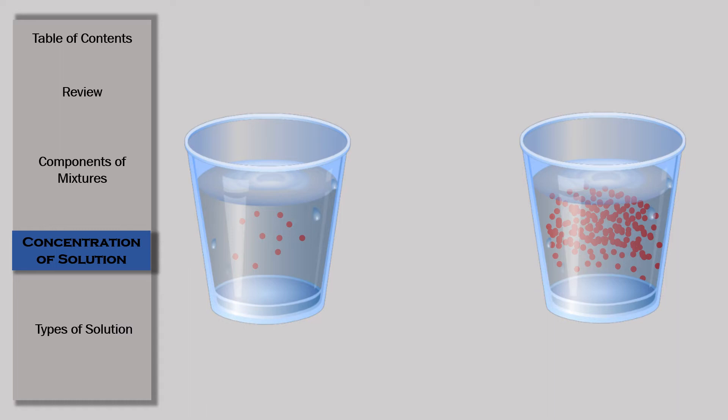So the first glass is said to be a dilute solution because less solute is dissolved in it, while the second glass of water has more red powder.